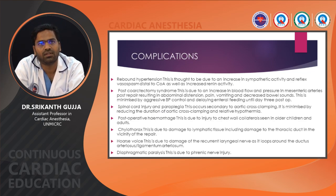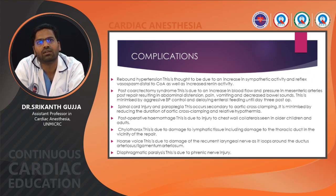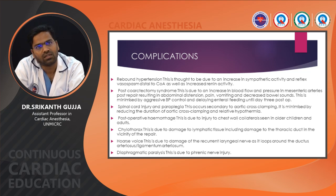Rebound hypertension is thought to be due to increased sympathetic activity and reflex vasospasm distal to the coarctation, as well as increased renin activity. Post-coarctectomy syndrome is due to increased blood flow and pressure in mesenteric arteries post-repair, resulting in abdominal distension, pain, vomiting, and decreased bowel sounds. This is minimized by aggressive BP control and delayed enteral feeding until day 3 of the postoperative period.